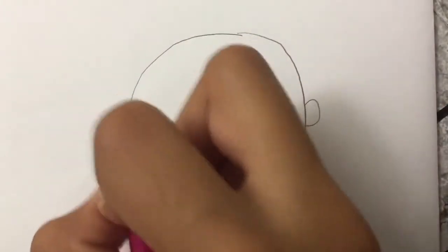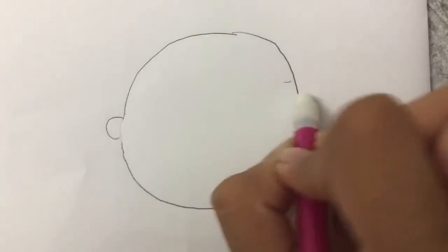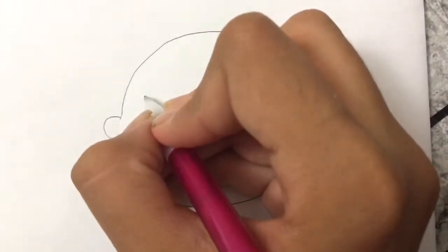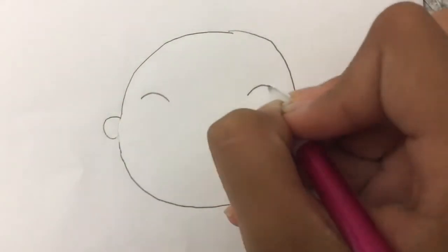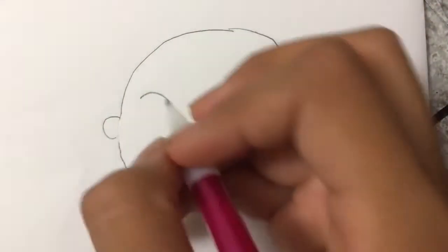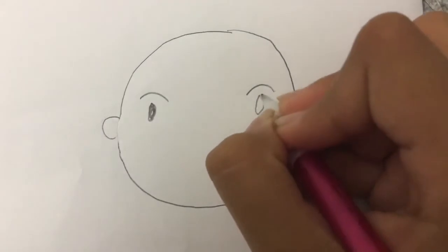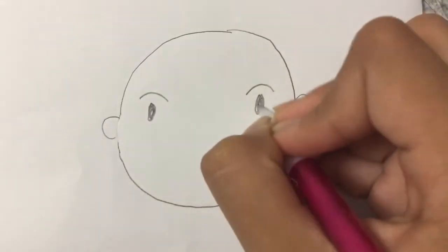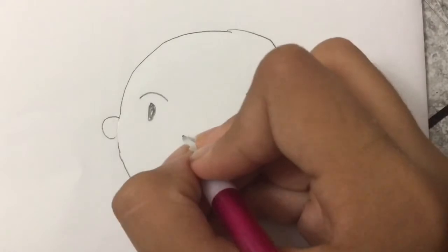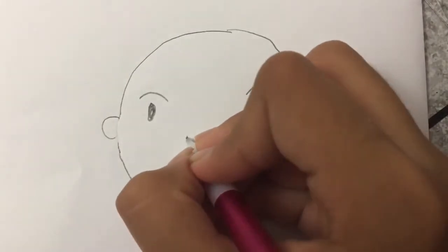And then I'm gonna erase this part like this. And then we're gonna draw his eyes. So we're just gonna draw his eyebrows like this, just curves. And I'm gonna draw a circle and color it in on both sides like this, or more of an oval like that. And then he doesn't have a nose, so we're just gonna draw two dots like this.